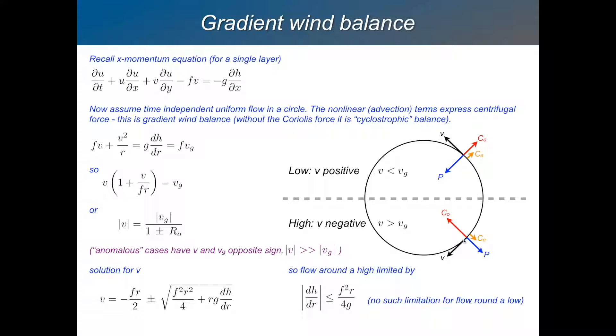Now, you can group those two things together. You can say that the modulus of V is equal to the modulus of Vg divided by one plus or minus. And what is V over Fr? It's the Rossby number. So, if we're close to geostrophic, V is close to Vg because this is small. The Rossby number is small. The full solution of this equation is this. The solution for V is just a quadratic equation. You can solve it. V is equal to minus Fr over 2 plus or minus this thing, which is in the square root.